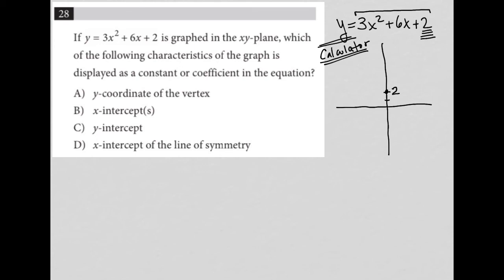The 2 is a constant, and the 2 is a characteristic of the graph being the y-intercept. And when I look at my answer choices, I see that choice C here says that the y-intercept fits that bill, so I'm going to just choose that. It's the best answer here.